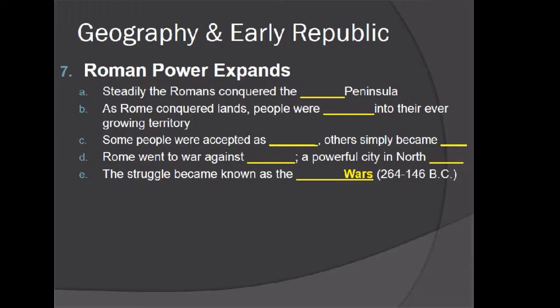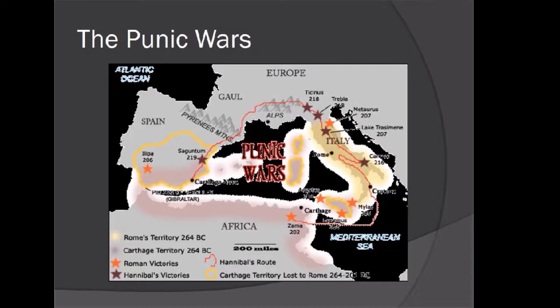Rome eventually went to war against Carthage, a powerful city in North Africa. The struggle became known as the Punic Wars — spelled P-U-N-I-C — lasting from 264 BC until 146 BC, about 120 years. A map shows some of the battles and strategies used as both sides attempted to conquer each other.